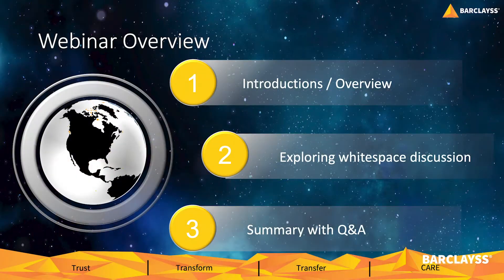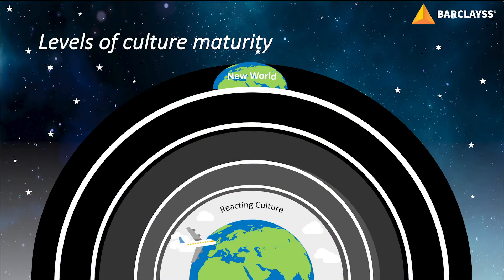We're going to do something a little bit differently with this one. We're not going to necessarily present a presentation today. We're going to use the presentation that you can see to guide our discussion and give you some understanding around white space. The first place we're going to start is talking about the levels of culture maturity, because when we're talking about white space we are talking about culture and we're talking about people and behaviors and the way things move.